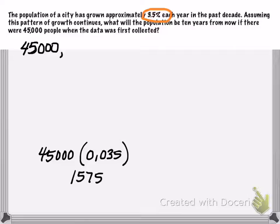So is this the next term in the sequence, 1,575? Well clearly not, because if my population went from 45,000 down to 1,575, my population wouldn't be growing. That would be a drastic decrease.